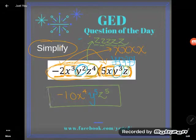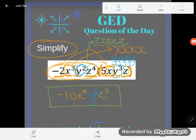And this is done. What is the final answer? Well, this is as simplified as it's going to get. It's just negative ten x to the fourth, y to the fifth, z to the fifth.